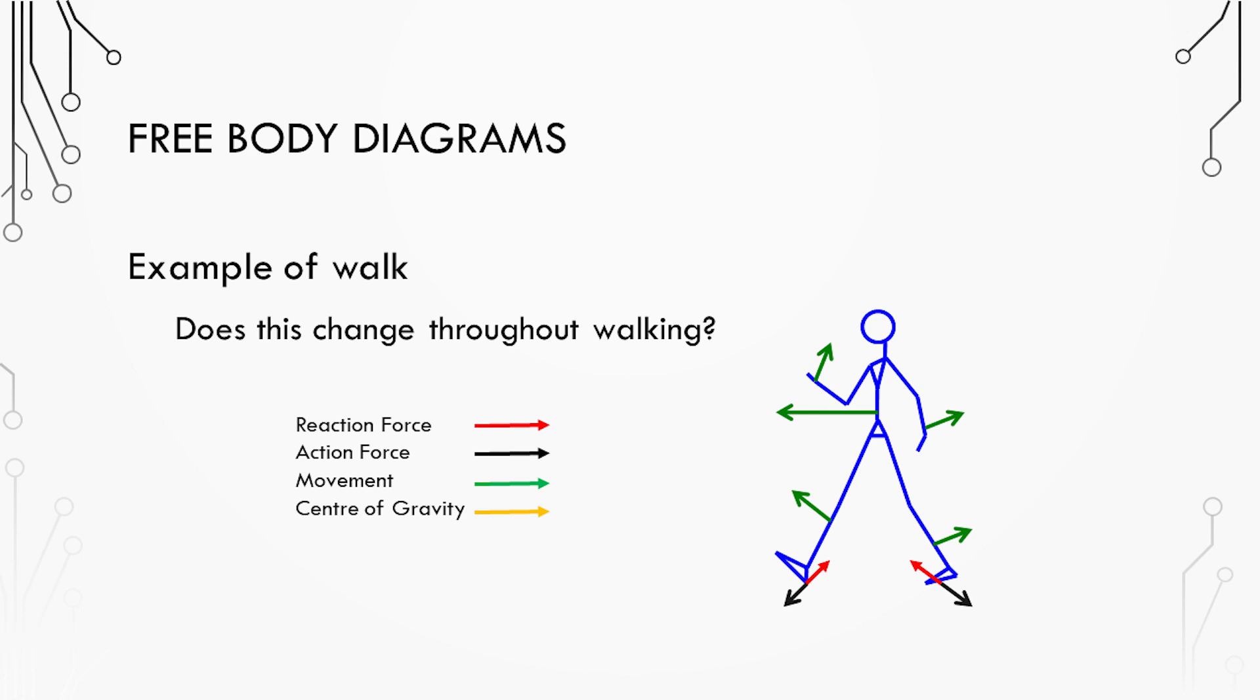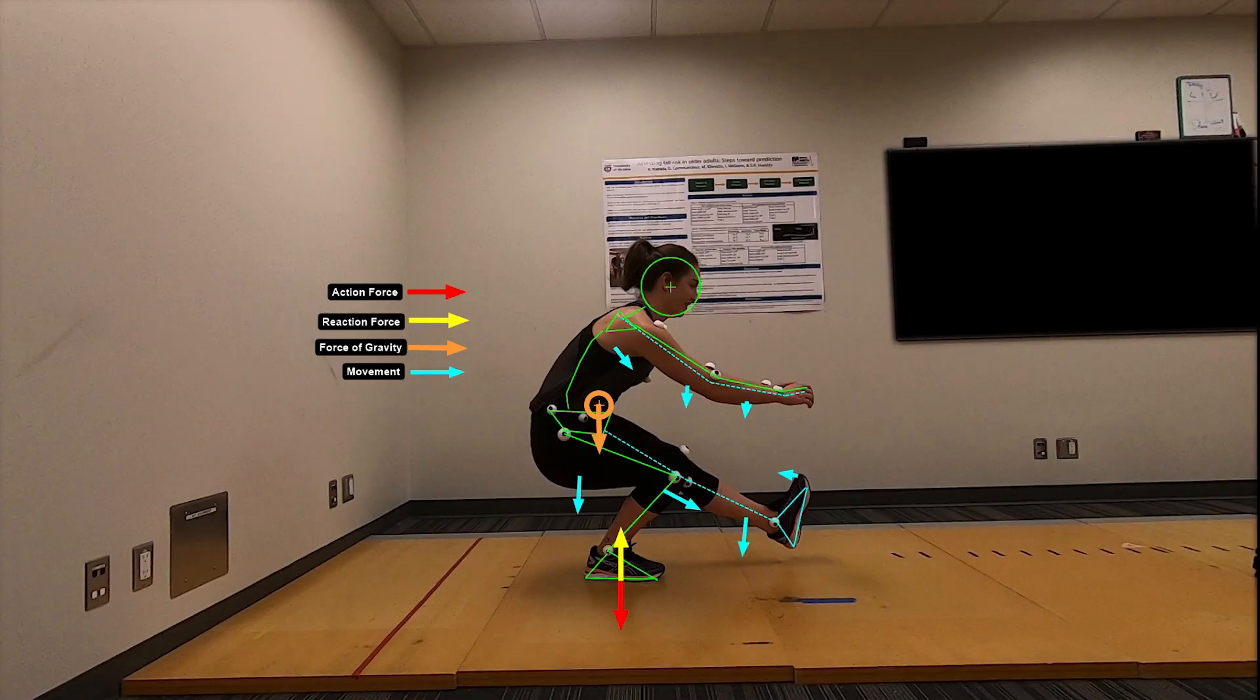This will include contact forces which will be comprised of action and reaction forces, the force of gravity, and movement vectors. It's also important to include a legend. You need to indicate what color vector is representing each force or movement. Another thing to consider is that these are vector quantities that include both magnitude and direction so you need to be representing changes in magnitude and direction.